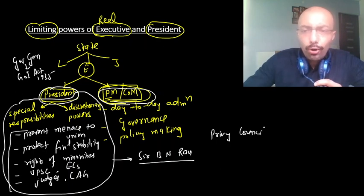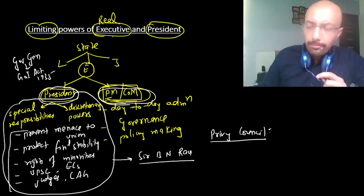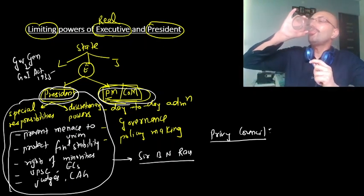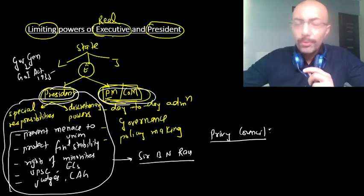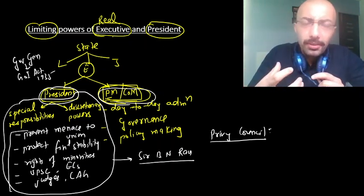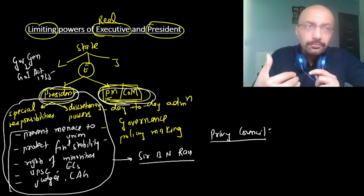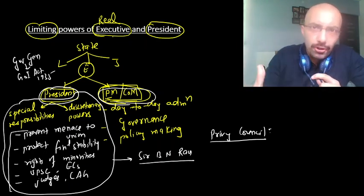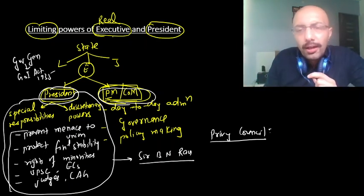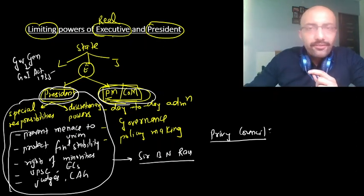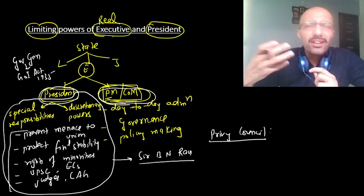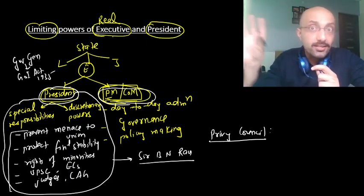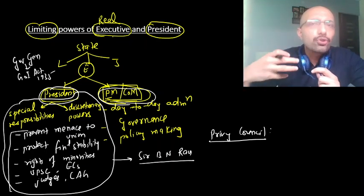A Privy Council is a small group of people very close to the monarch who advise him on various matters of administration. Sir B.N. Rao proposed a body — which he called the Council of State (not to be confused with the Rajya Sabha) — which would serve like a Privy Council consisting of some members, including the Prime Minister, the Deputy Prime Minister (if any), the Speaker of Lok Sabha, the Chairman of the Senate (later called Rajya Sabha), and the Chief Justice of India.